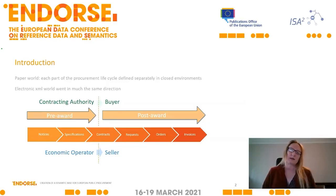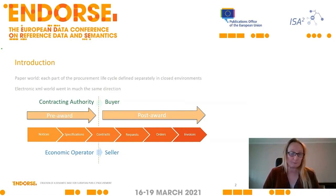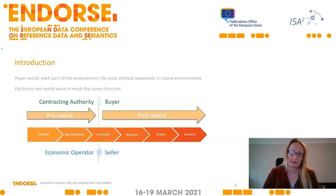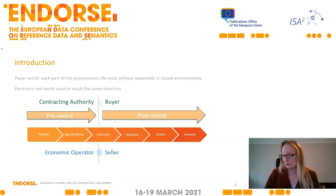In pre-award, we generally spoke about 'contracting authorities', and in the post-award, 'buyers'. We've seen a move with the e-forms now that we have the term 'buyer' as well in pre-award. The same applies to 'economic operator' and 'seller'. So when we were working in the exchange of documents, for example in the CEN BII workshop of the Committee of European Standardization, we found there were some inconsistencies like this in terms.